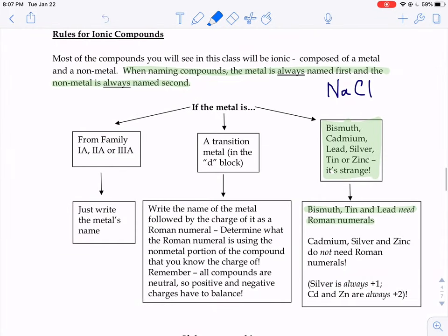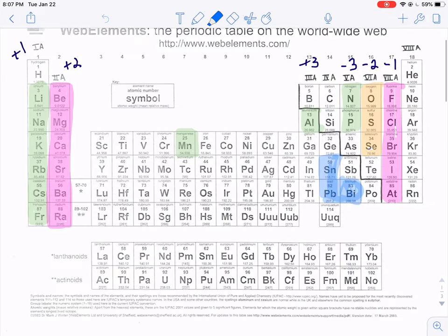What are the other exceptions? Cadmium, silver, and zinc don't need Roman numerals. When you look at where cadmium, silver, and zinc are on the periodic table: cadmium, silver, and zinc, they are in that center section. You might think that they would need a Roman numeral, but it turns out that cadmium, silver, and zinc always have consistent charges, just like an alkaline metal is always plus one, or an alkaline earth metal is always plus two.